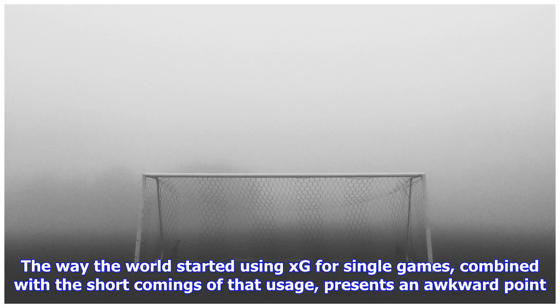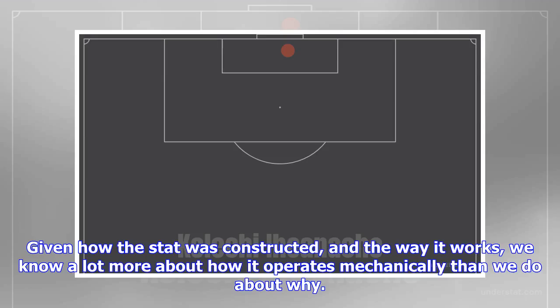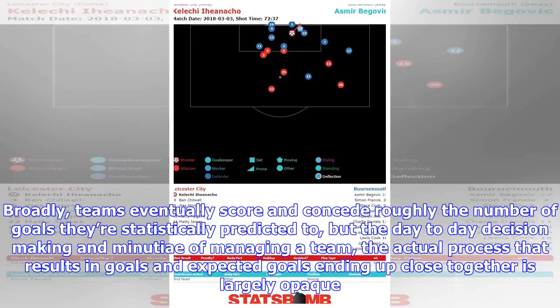The way the world started using XG for single games, combined with the shortcomings of that usage, presents an awkward point. Given how the stack was constructed and the way it works, we know a lot more about how it operates mechanically than we do about why. Broadly, teams eventually score and concede roughly the number of goals they're statistically predicted to, but the day-to-day decision-making and minutiae of managing a team — the actual process that resolves in goals and expected goals ending up close together — is largely opaque.